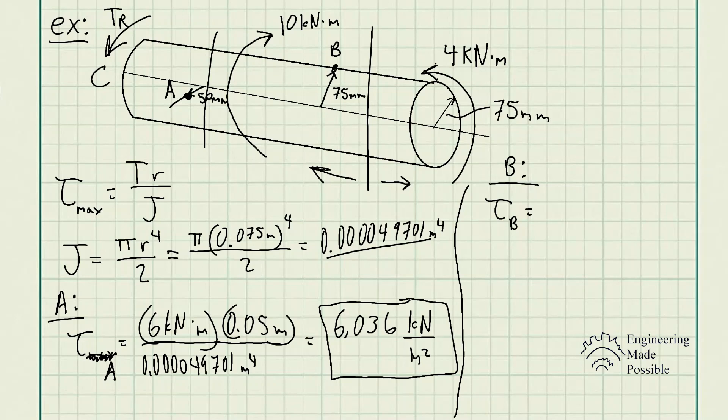Just like we did in statics, looking at the internal forces, you could always analyze an object from one side or the other and still get the equivalent result. In this case, you could analyze it from point B going to the 4 kilonewtons towards the right to make it simpler. In this case, the torque that causes the shear stress at point B would be the 4 kilonewton meter, right?